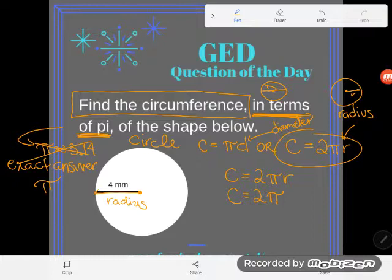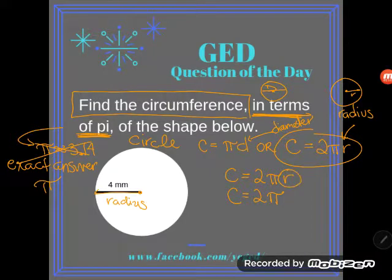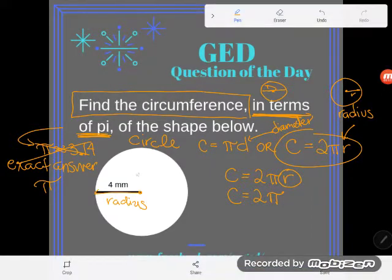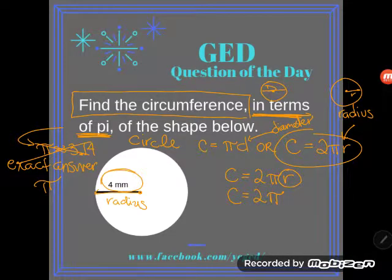Now the r though, the r is an unknown until we plug it in, and we did find out what the r is. We said according to this diagram here, the radius is four millimeters, so let's plug in the four. Notice how I do that with parentheses.